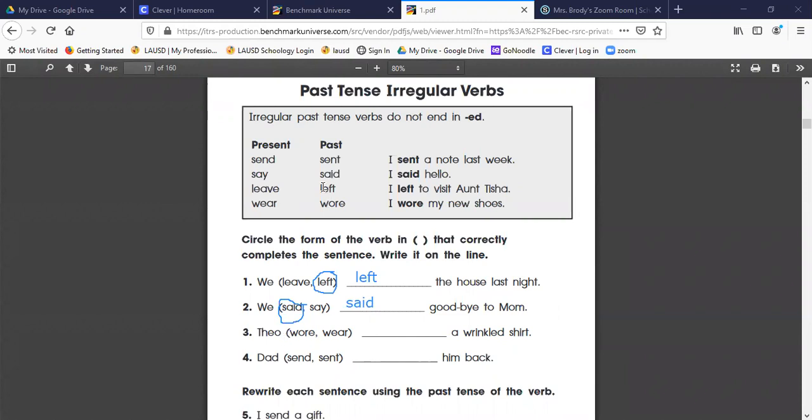Number three: Theo wore or wear a wrinkled shirt. Think about it as yesterday - yesterday he wore. So I'm going to circle that and again I'm going to write it on the line. W-O-R-E.